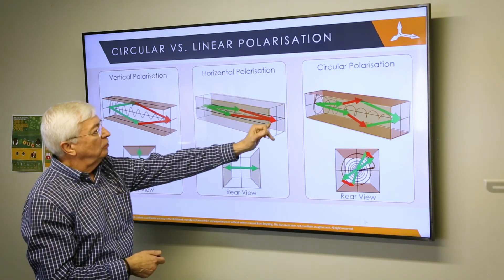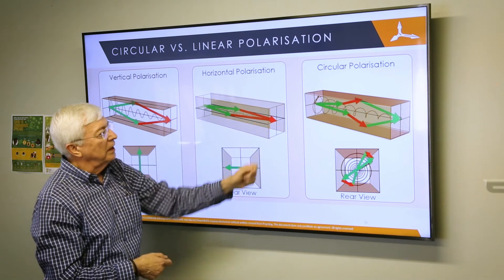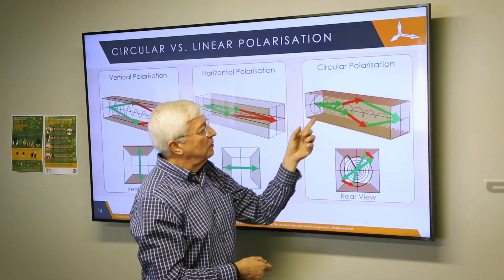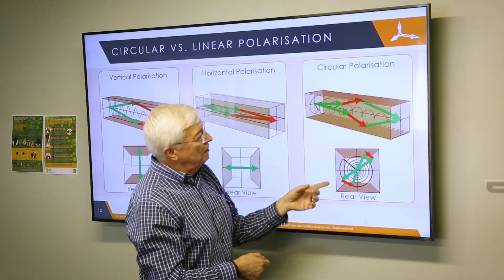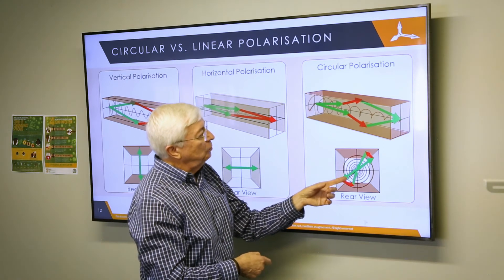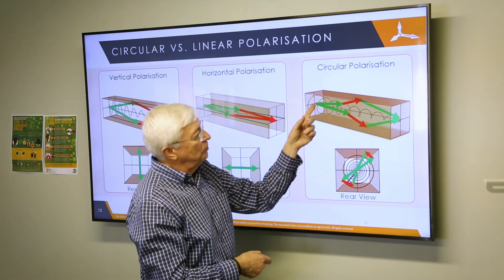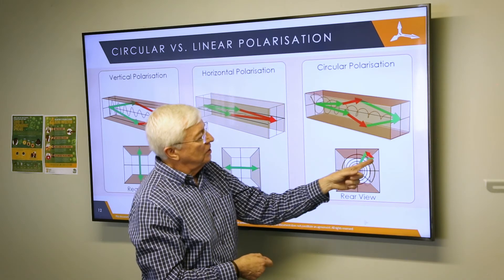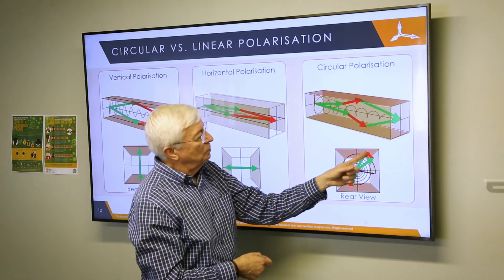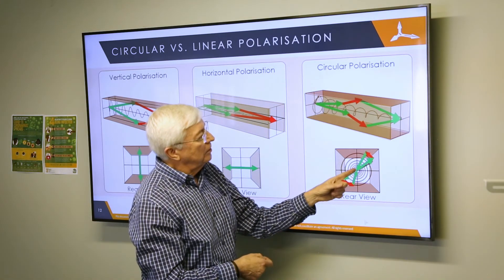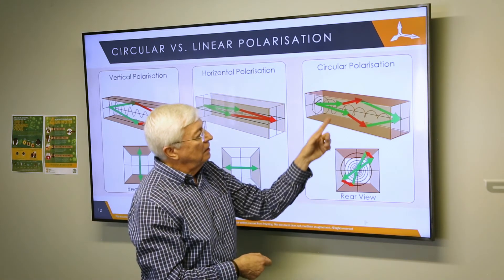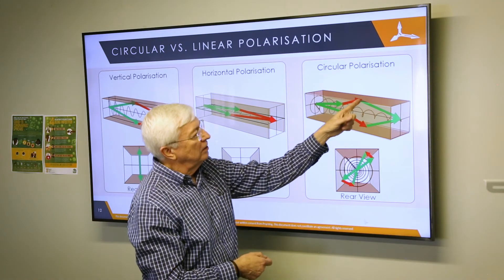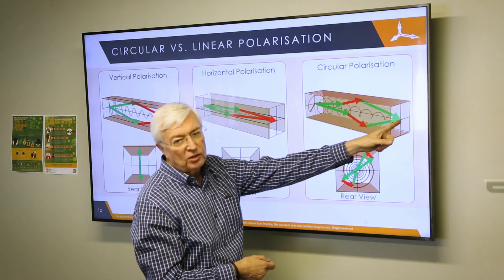Now if you look at circular polarization, because of the nature of the wave it would typically go through two hops — once off the side and once off the roof — and back into the receiving antenna. As you know, 180 degrees plus 180 degrees equals 360 degrees, so we actually have an additive signal coming into the receiving antenna.